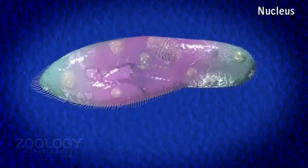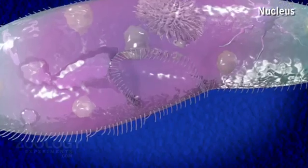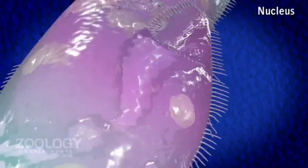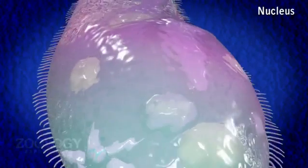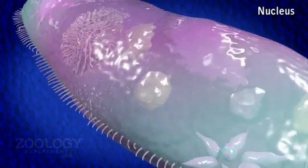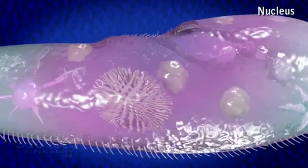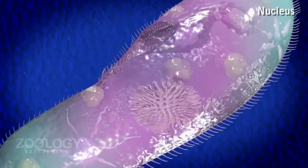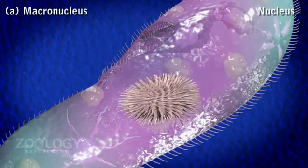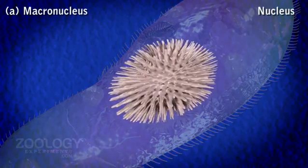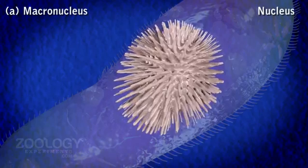Nucleus. Paramecium possesses two types of nuclei called heterokaryotic. In Paramecium caudatum, there is a large macronucleus and a small micronucleus. The macronucleus is roughly kidney-shaped and with ordinary nuclear membrane.